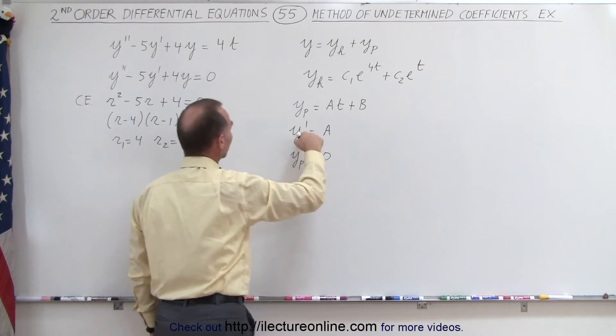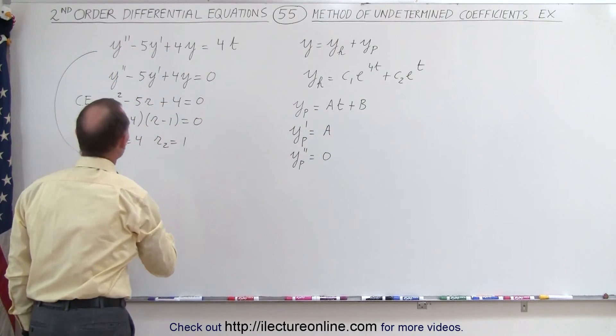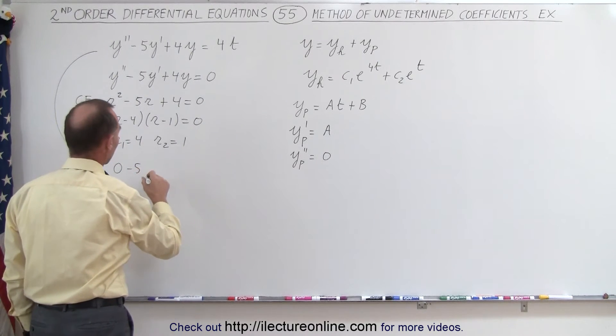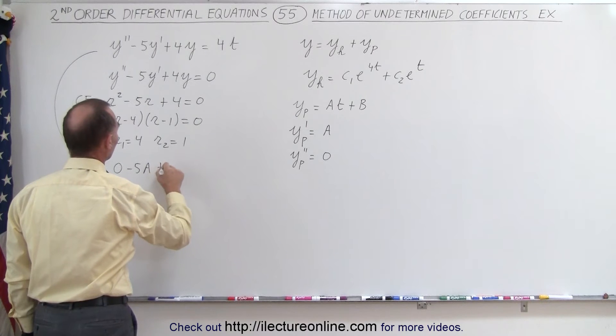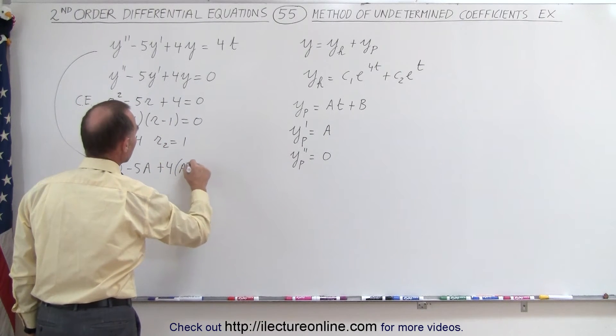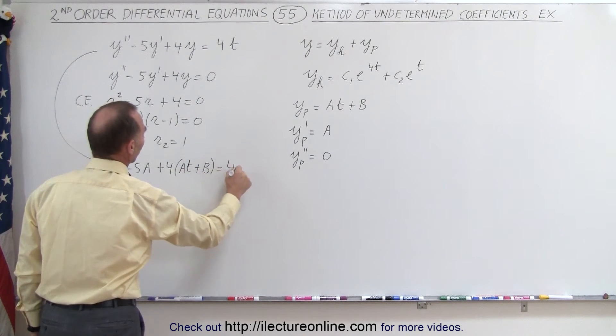So y_p' = A, and y_p'' = 0. Now we plug these three back in the original equation. And so we get y'' - 5y' + 4y, which is 0 - 5A + 4(At + B), and we set that equal to 4t.